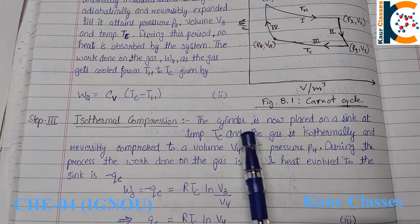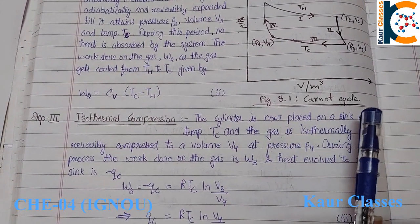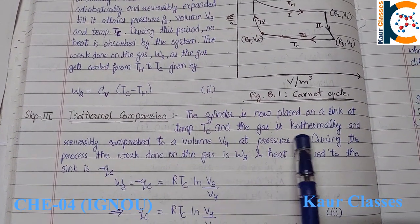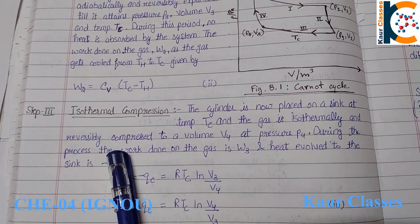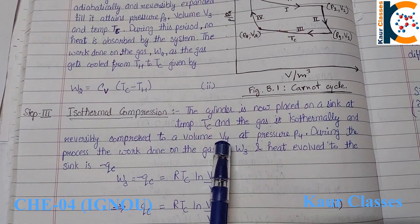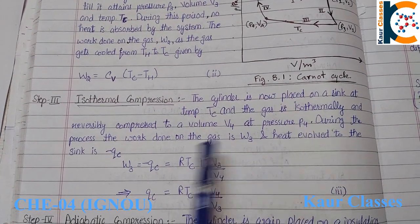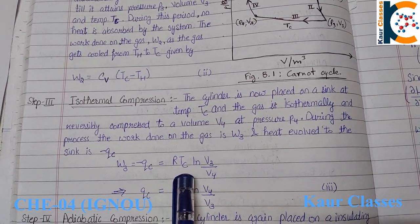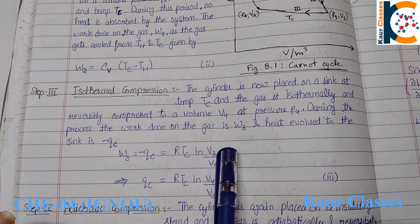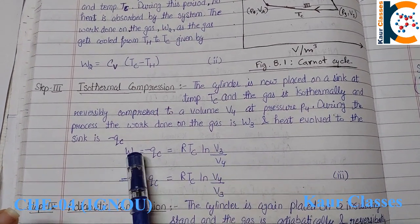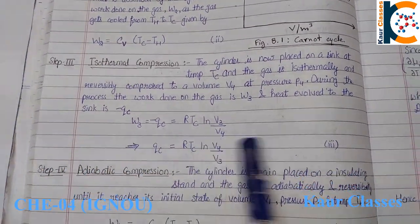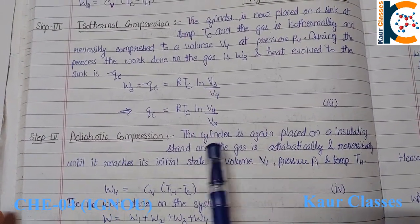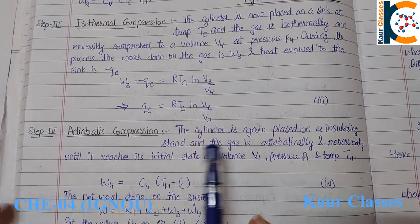Step three — isothermal compression: the cylinder is placed on a heat sink at temperature T_C and the gas is isothermally and reversibly compressed to volume V4 and pressure P4. The work done W3 = −q_C = RT_C log(V3/V4). Adjusting the negative sign gives equation number three.